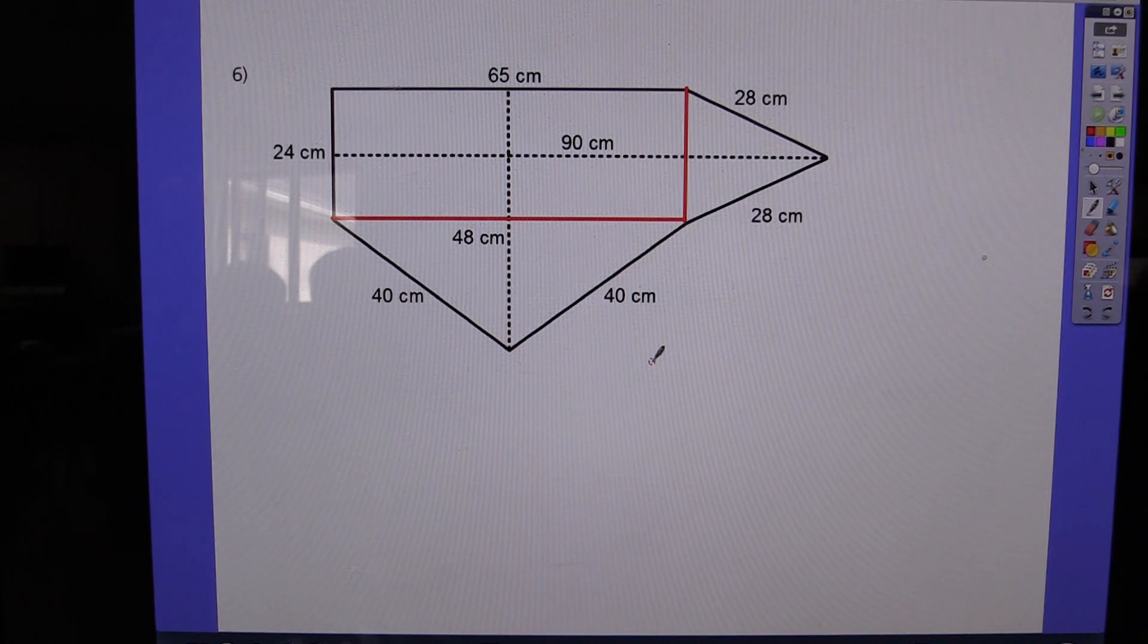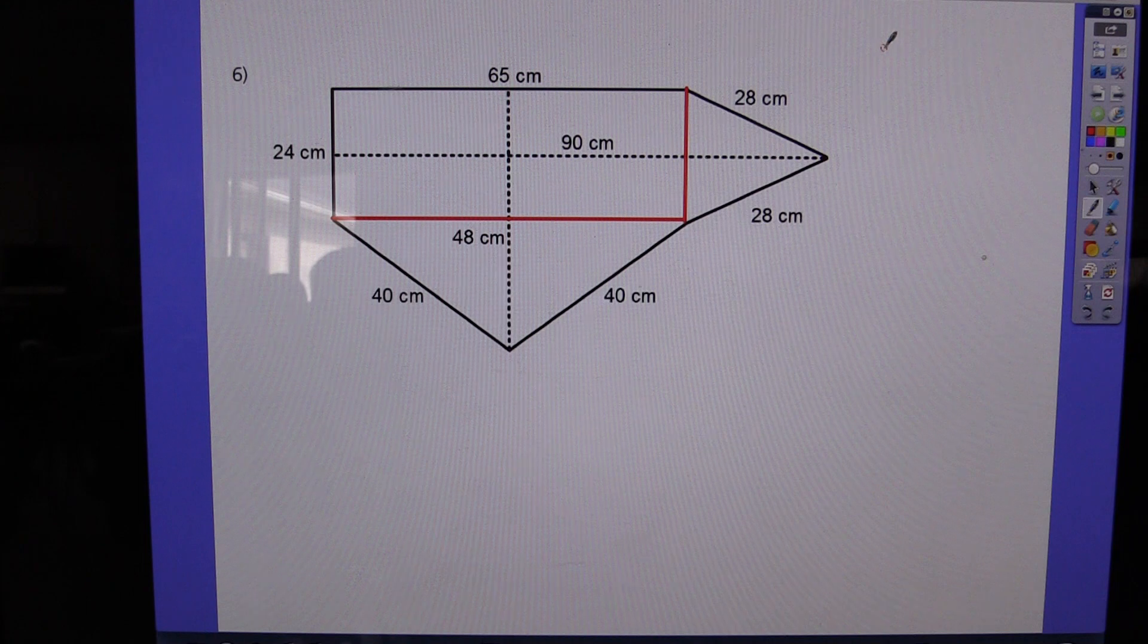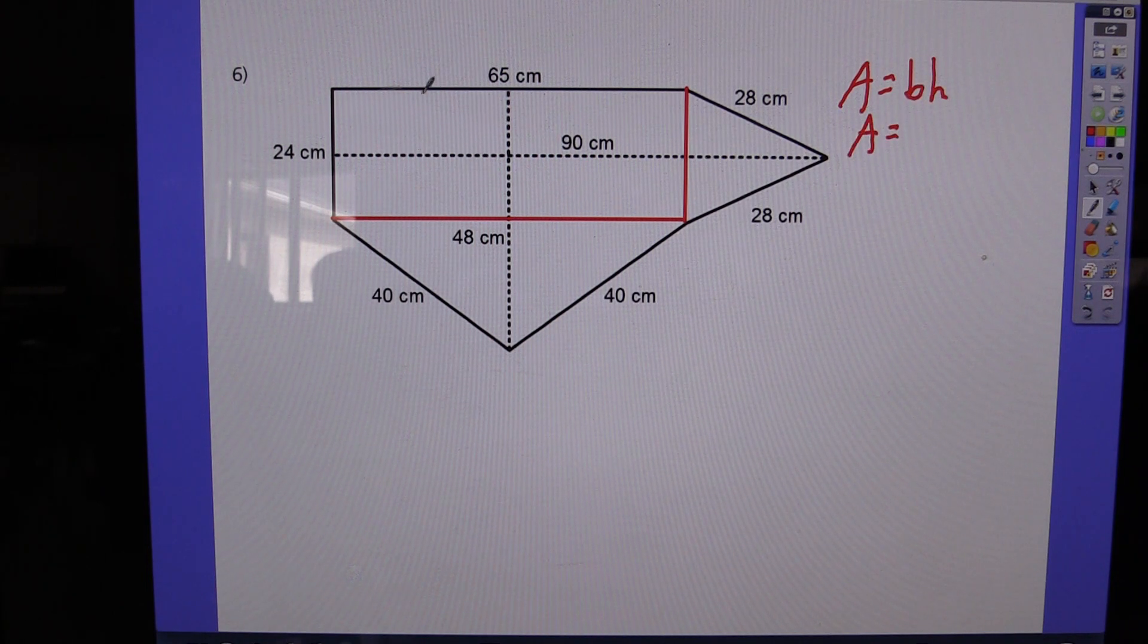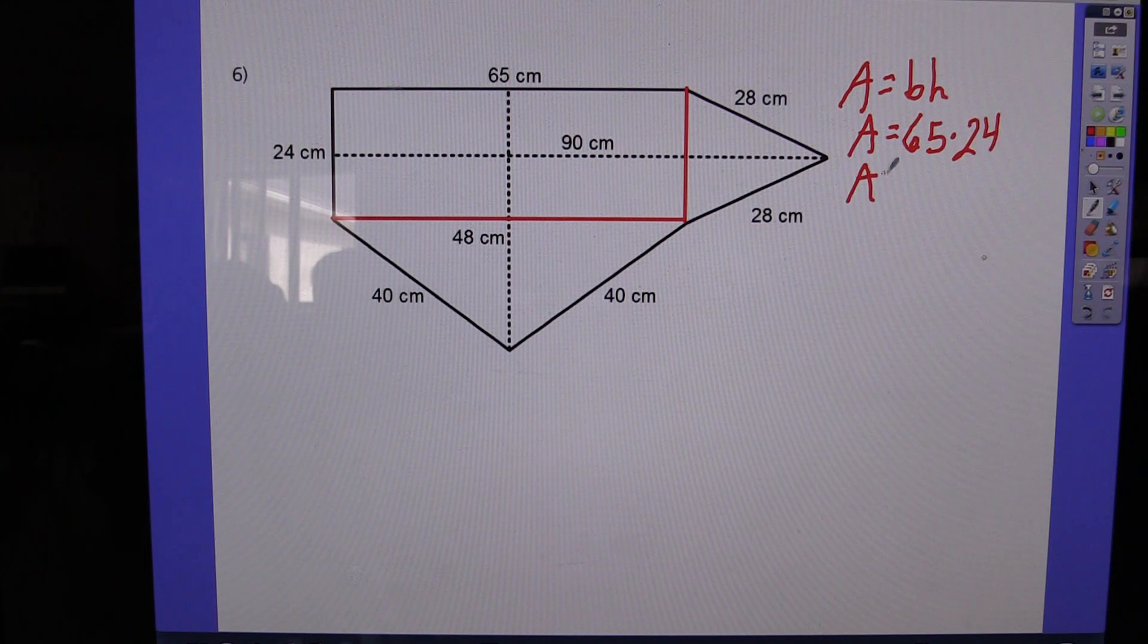Now let's get back to formulas and that sort of thing. So the formula for finding the area of a rectangle, and I'm going to do this one in red, is area equals base times height. Now when I look at this rectangle, I'm going to say that this side here is 65 centimeters and I'm going to say that the height here is 24 centimeters. So all I have to do is multiply 65 and 24 and it will tell me the area of the rectangle.